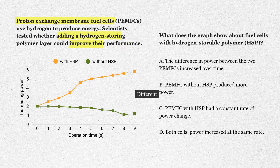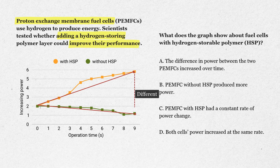But as time goes on, notice what happens. The orange line shoots up all the way to nearly 6, while the green line actually goes down slightly, ending near 1. So the difference between them isn't just small — it keeps getting bigger over time.